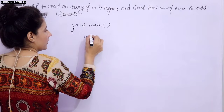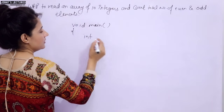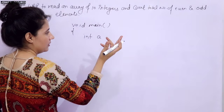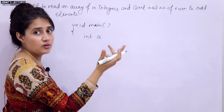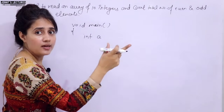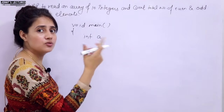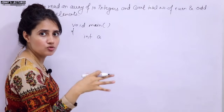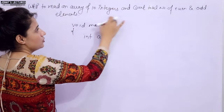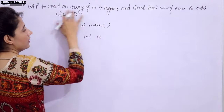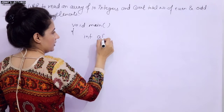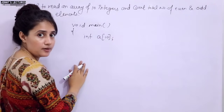So, we have an array of 10 integers. You can take any array name. In the previous video, I took the name 'marks' because we were storing marks of students — it's better to take a meaningful name. Here, since we are just reading 10 integers, I am taking array name A of 10.